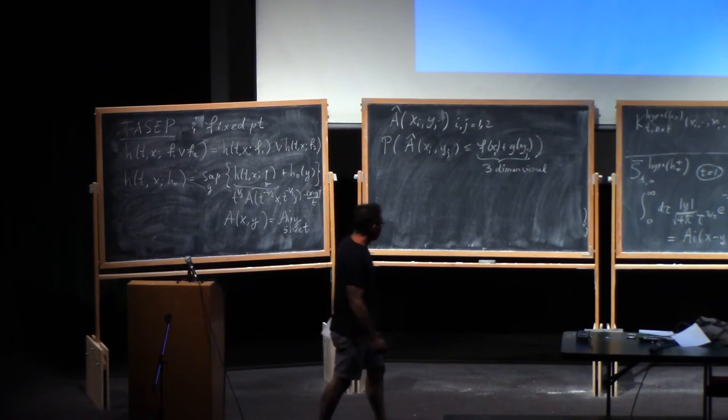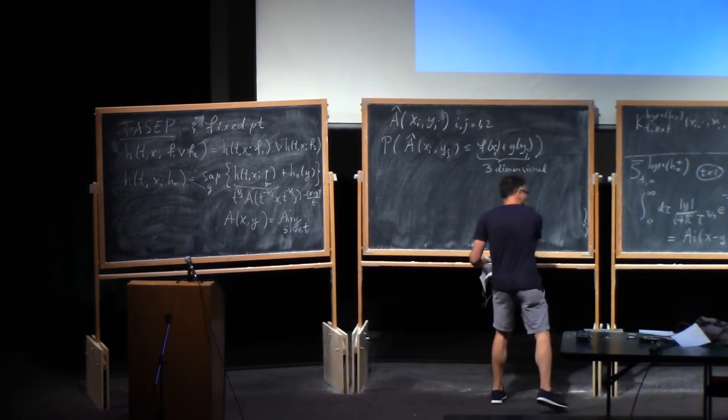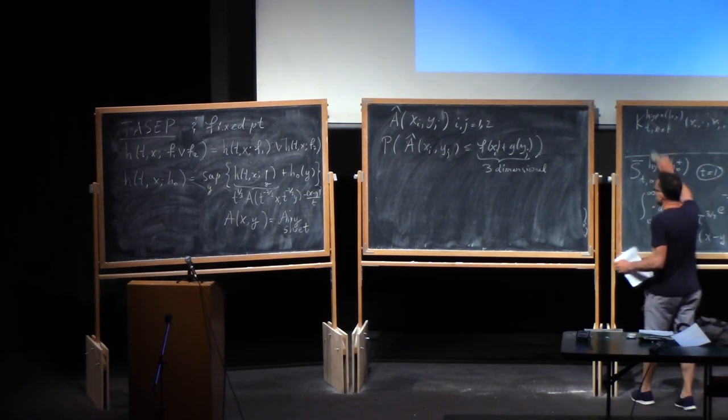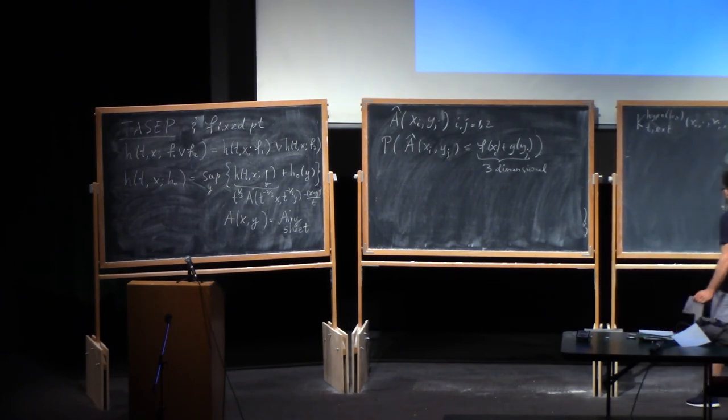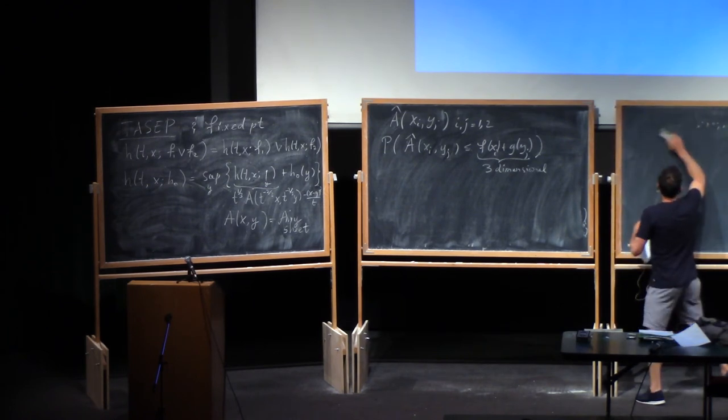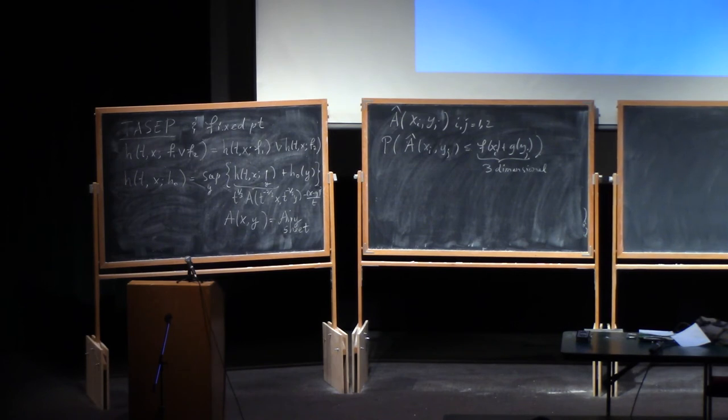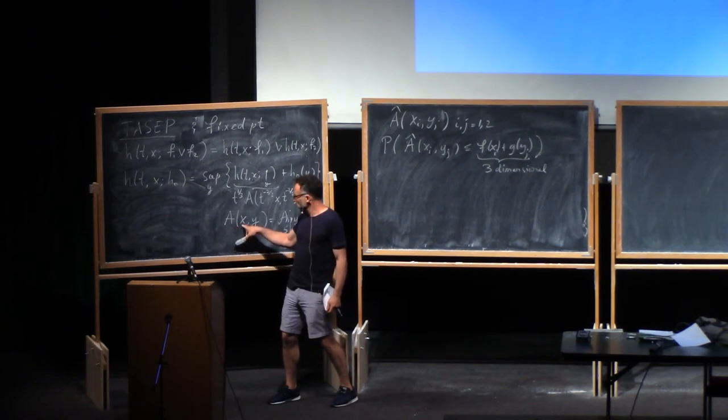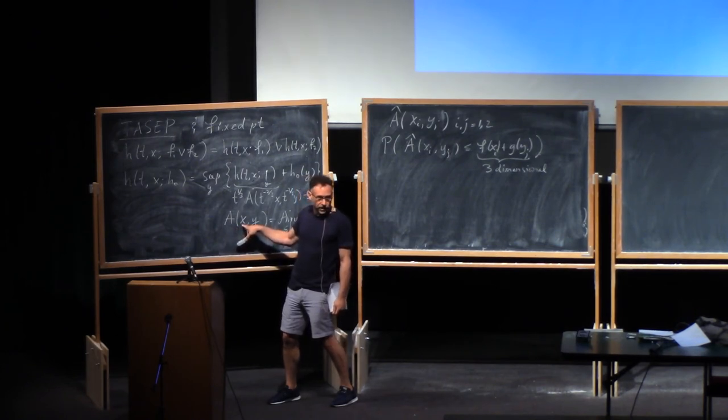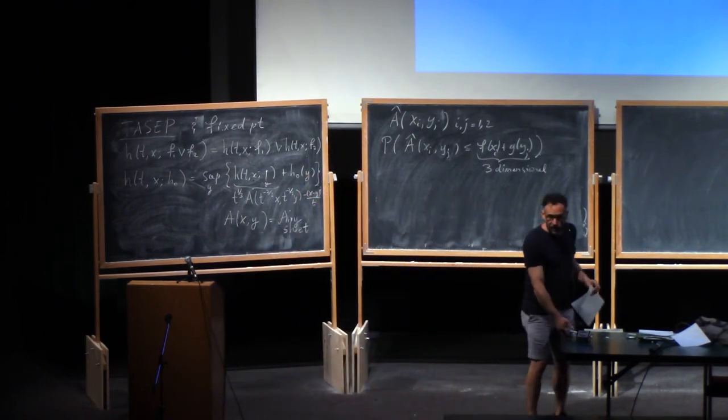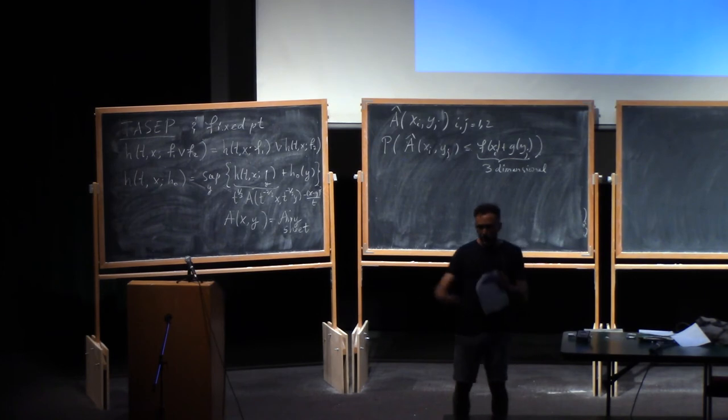So how is all of this useful? All this sheet stuff. I said I wanted to prove this. Let me show you that the proof of this is very easy using this Airy sheet technology. So one thing you do know, and it's easy, is that the Airy sheet is an Airy process in each coordinate. So in X, it's the Airy 2 process, and in Y, it's the Airy 2 process. That's not enough to characterize it. So it's the Airy sheet in analogy to the Brownian sheet being Brownian in both coordinates.